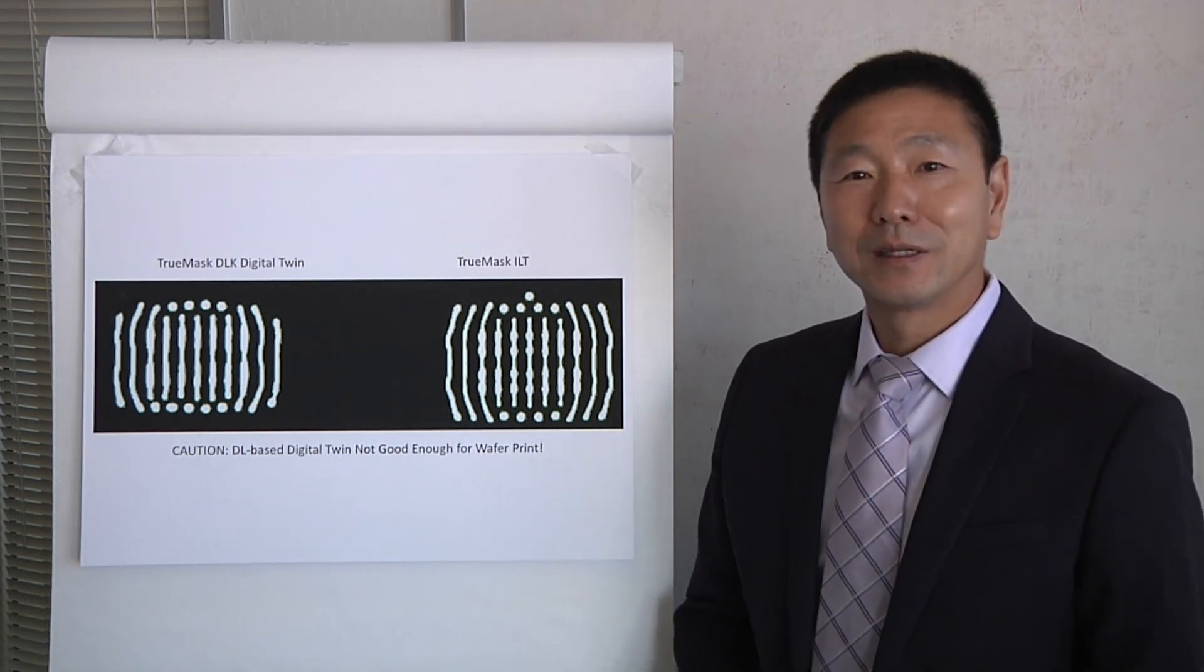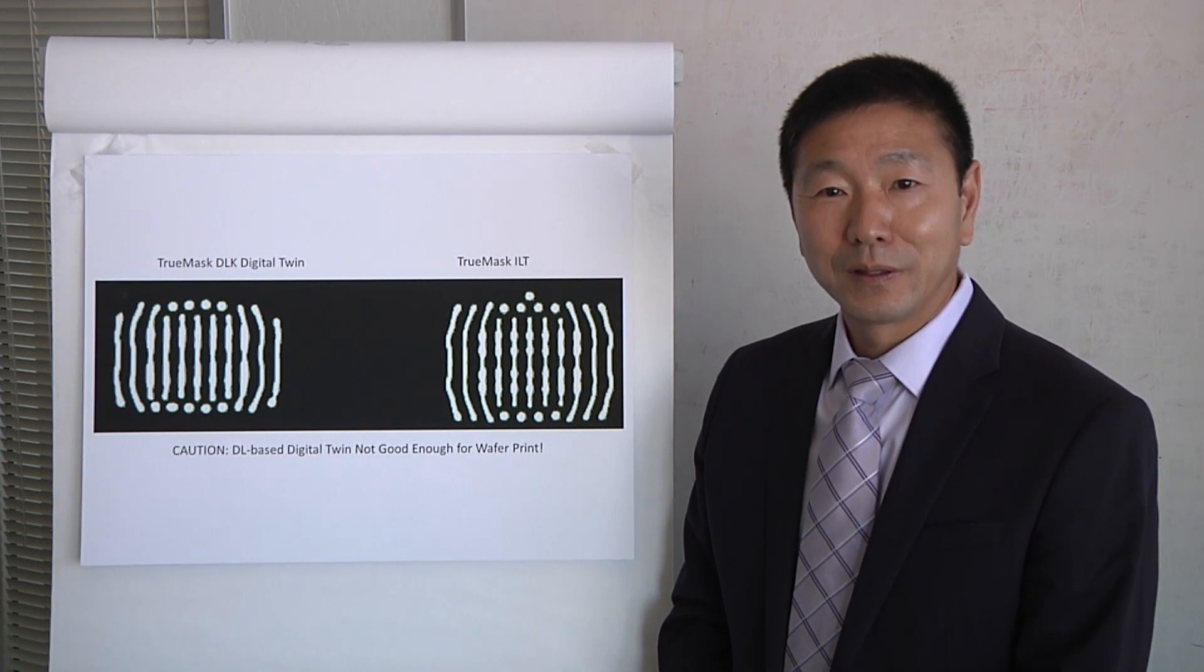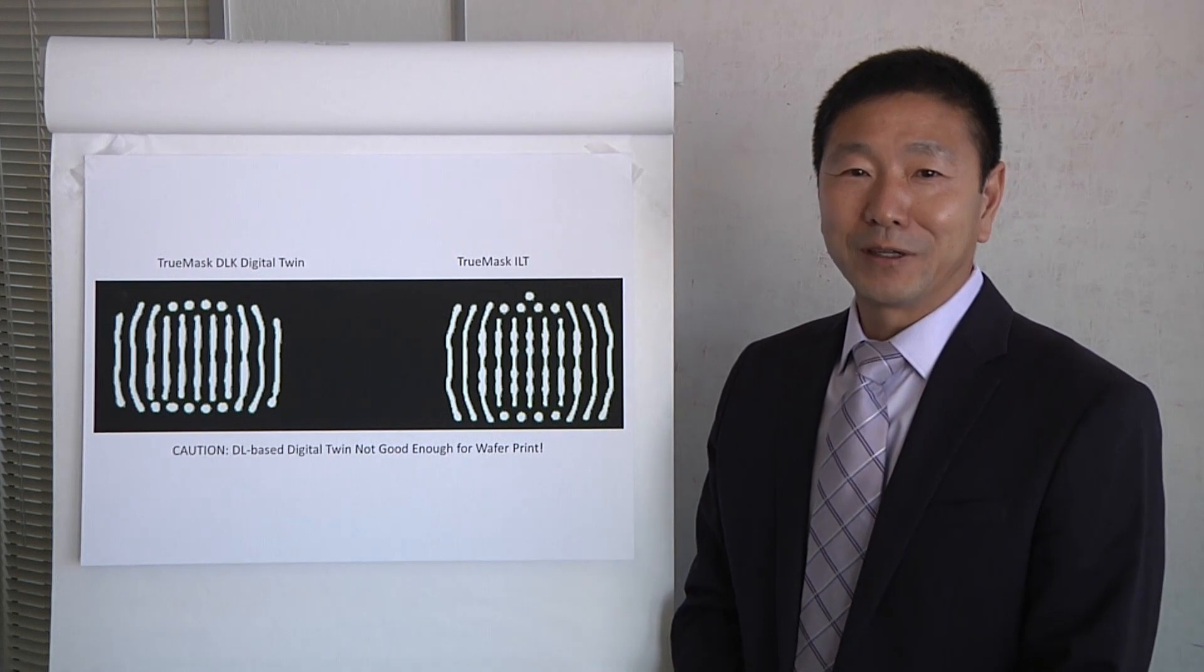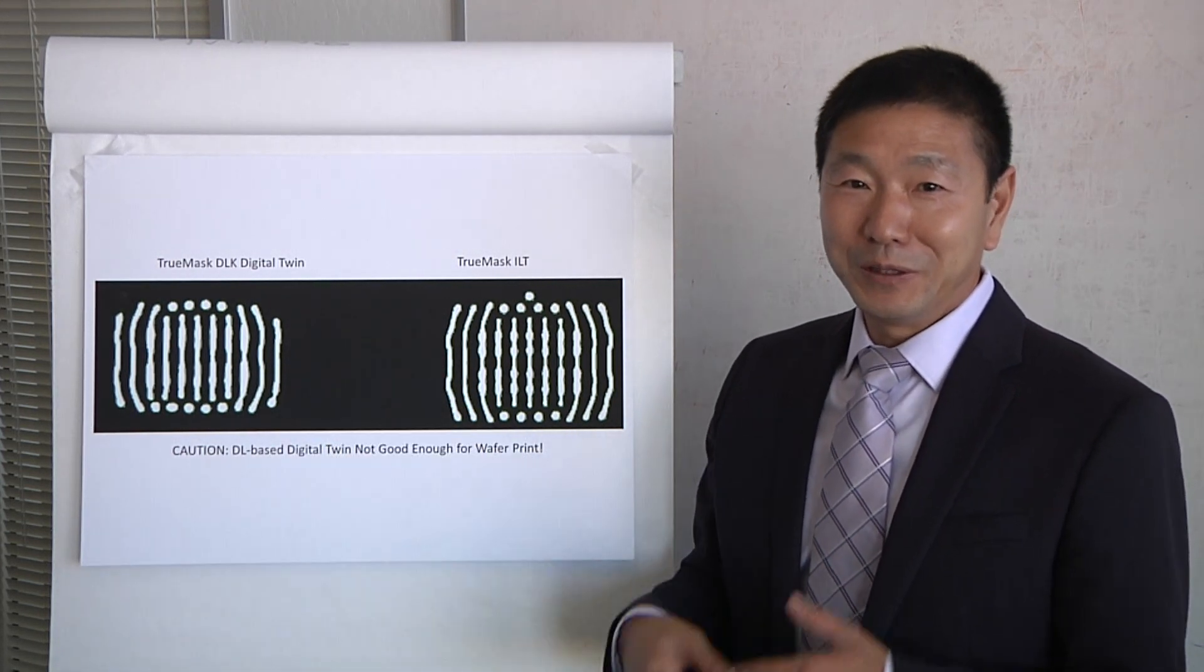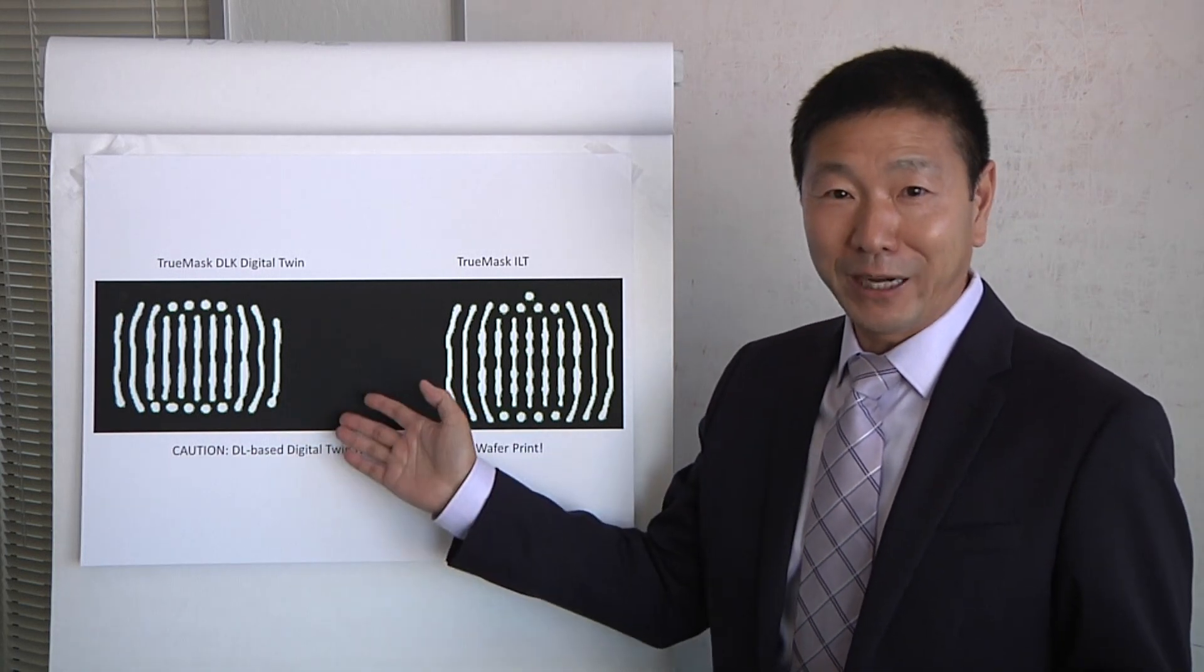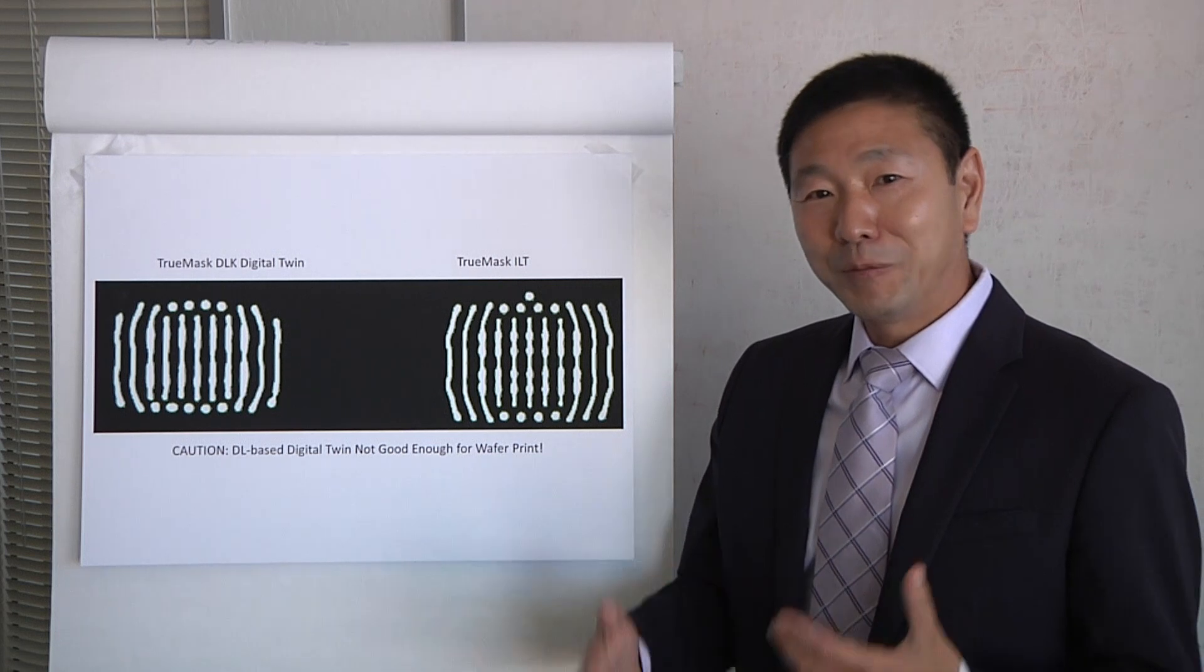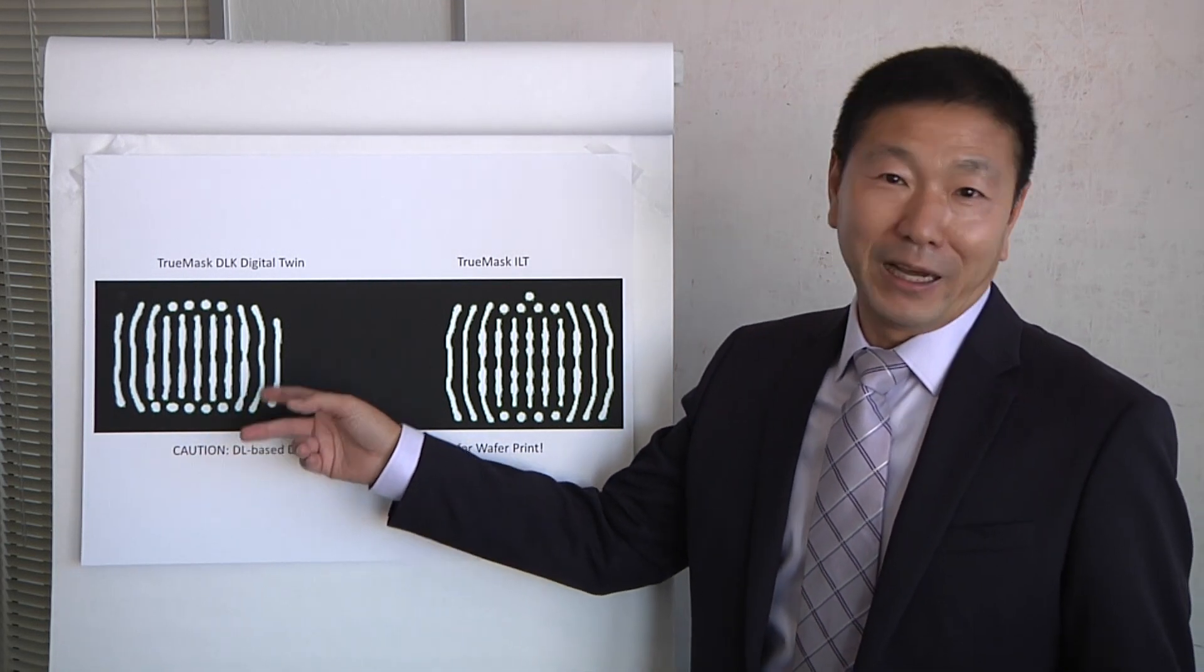Really what you're doing is taking advantage of machine learning techniques and applying them into the photomask space where it's never really been used before, right? Exactly. In the old time, it was very difficult to get full reticle curvilinear patterns. Now with deep learning, with digital twin from deep learning, you can get this very cost effectively and very fast.